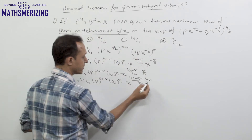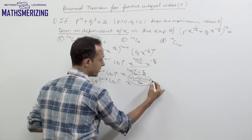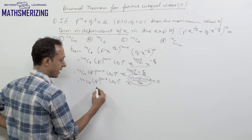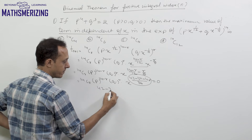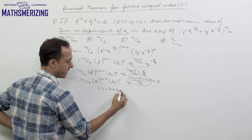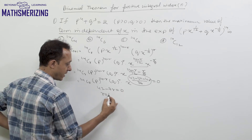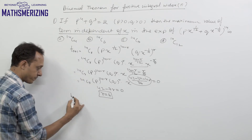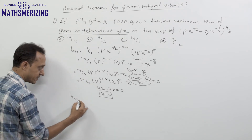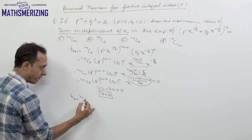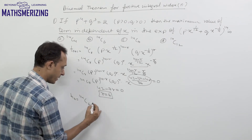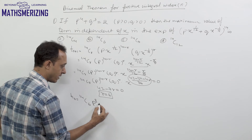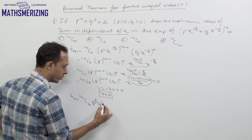For the term independent of x, the exponent of x must be 0. So 42 - 7r = 0, giving r = 6. This is the 7th term, and it equals 14C6 · p^8 · q^6.